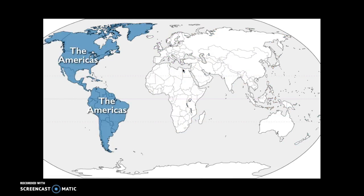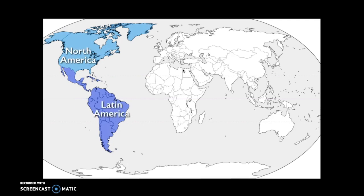We could be talking about the Americas, referencing both North and South America, or we could break that further into North America and Latin America. The division is really between the modern-day United States and Mexico — any country that speaks a language derived from Latin, like Spanish, is considered part of Latin America. We can divide Latin America even further into Mesoamerica or Middle America, and the Caribbean islands. Those are the various divisions you need to be aware of for the Americas in AP World History.